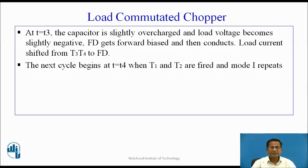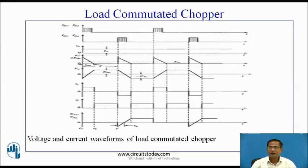At t=T3, the capacitor is slightly overcharged and load voltage becomes slightly negative. The freewheeling diode gets forward biased, conducts, and the load current shifts from T3, T4 to the freewheeling diode. The next cycle begins at t=T4 when T1, T2 are fired and mode 1 repeats. These are the waveforms for gate pulses T1, T2 and T3, T4, load current, output voltage, voltage across C, freewheeling diode, charging and discharging current, and voltage across T1 and T2.